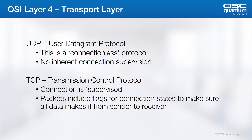UDP is considered connectionless in the sense that there is no assurance that the intended device received a given packet. The sender, receiver, and infrastructure are all on the honor system to deliver the communication. On the other hand, when TCP is used, a supervised connection is negotiated before any data is even sent at all. The transmitter tells the receiver how many packets they should receive and how big each packet should be, and the receiver then confirms that each packet was received properly.